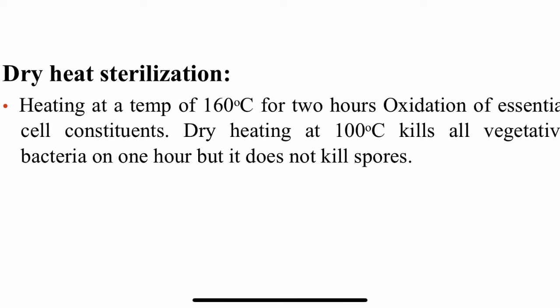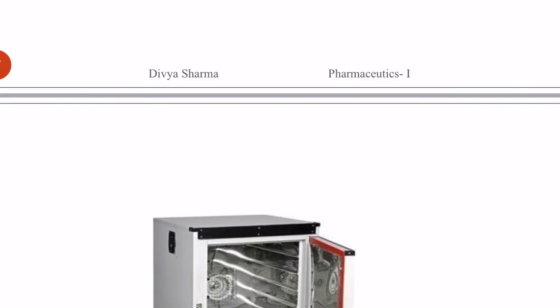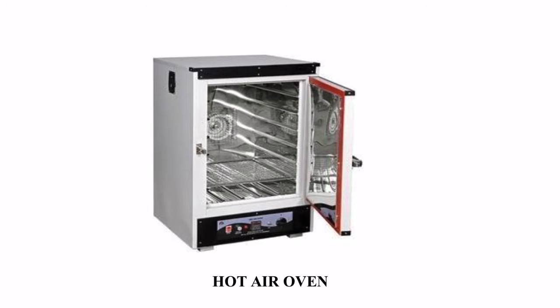The first one is dry heat sterilization. The name suggests itself — dry heat sterilization means sterilizing using dry heat. In the case of dry heat sterilization, we use a hot air oven. This is a picture of a hot air oven; it is very simple equipment.